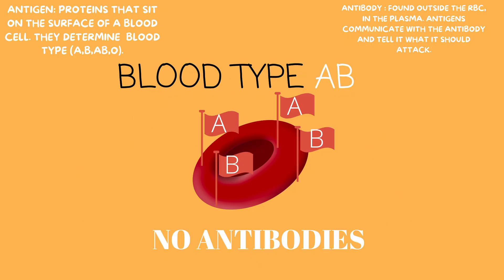In blood type AB, this blood is representing both A and B, so it doesn't need to fight anyone. It's cool with everyone, so it will have no defense — no army — or in other words, it will have no antibodies.